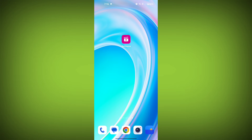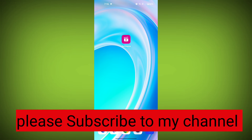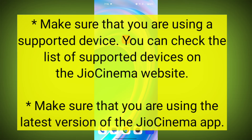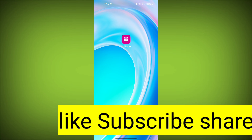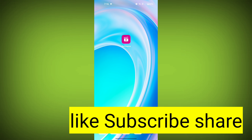Here are some additional tips to help you avoid Geo Cinema errors. Make sure that you are using a supported device — you can check the list of supported devices on the Geo Cinema website. Make sure you are using the latest version of the app, and keep your device's operating system up to date. Avoid using public Wi-Fi networks whenever possible, and use a strong and reliable password for your Geo Cinema account. By following these tips, you can help protect your account and avoid common errors.